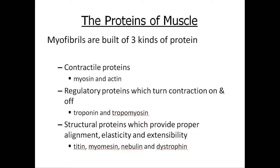Muscles are built from three proteins: contractile proteins like actin and myosin; regulatory proteins which turn contraction on and off — troponin and tropomyosin; and structural proteins which provide proper alignment, elasticity, and extensibility — titin, myomesin, nebulin, and dystrophin.